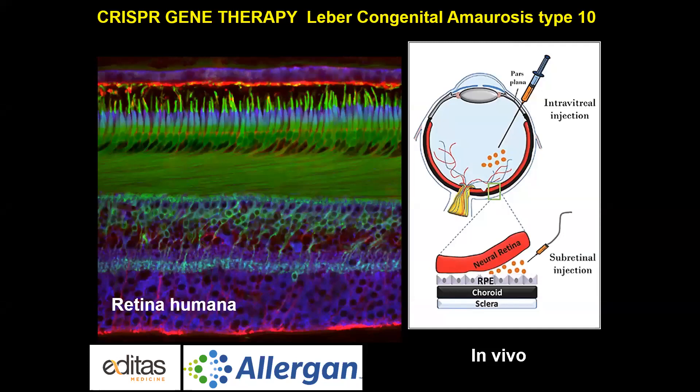There are more than 41 clinical trials ongoing at the moment in different parts of the world. The one probably closest related to albinism is for Leber congenital amaurosis type 10, a degenerative disease affecting the retina. People affected with this rare disease will eventually become blind. We can inject CRISPR tools intraocularly, intravitreally, and subretinally, hoping they will edit the affected gene.